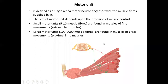The motor unit is defined as a single alpha motor neuron supplying a group of muscle fibers. For example, one alpha motor neuron may supply many fibers — this is a large motor unit — while another may supply only two muscle fibers, which is called a small motor unit.